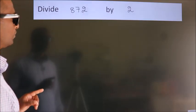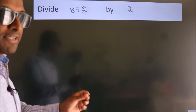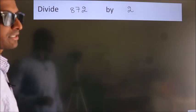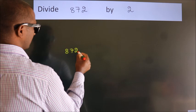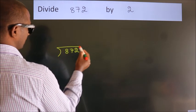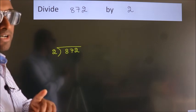Divide 872 by 2. To do this division, we should frame it in this way. 872 here, 2 here. This is your step 1.